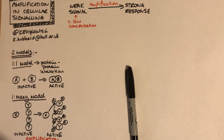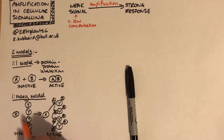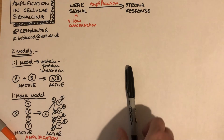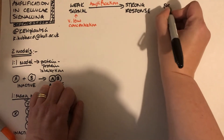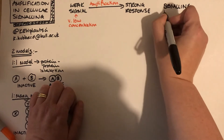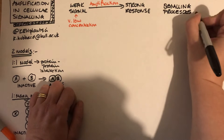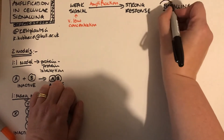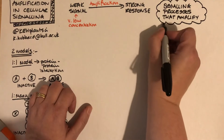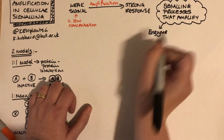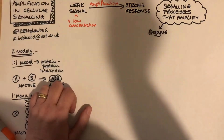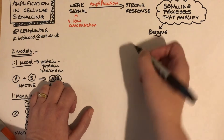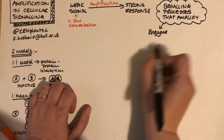That one-to-many model is where we get amplification. If one protein has to physically stick to another, that will not amplify the signal. But if one protein can activate multiple other proteins, we will get amplification. Enzymes are a prime example — with one enzyme protein, you can produce thousands of product molecules, or activate thousands of other things.